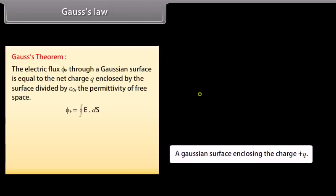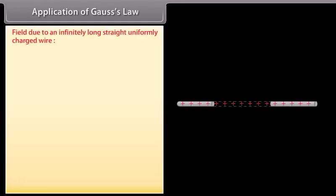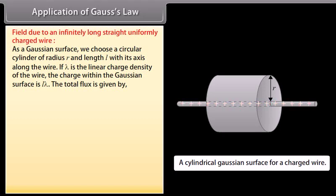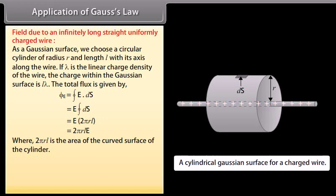Gauss's law: The electric flux φ_E through a Gaussian surface equals the net charge q enclosed by the surface divided by ε₀, the permittivity of free space. Application — field due to an infinitely long straight uniformly charged wire: Choose a circular cylindrical Gaussian surface of radius R and length L. With linear charge density λ, the charge within is Lλ. Since φ_E = ∮E·dS = E × 2πRL, Gauss's theorem gives the electric field at radial distance R as E = λ/(2πRε₀).